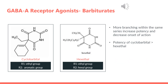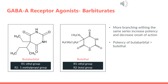In addition, more branching within the same series increases potency and decreases onset of action. For example, the potency of cyclobarbital is greater than that of hexethyl — even though both substituents have the same number of carbons, cyclobarbital has more branching, which increases its potency. The same concept applies to butobarbital versus butethyl: butobarbital is more potent because its substituents are more branched compared to butethyl.